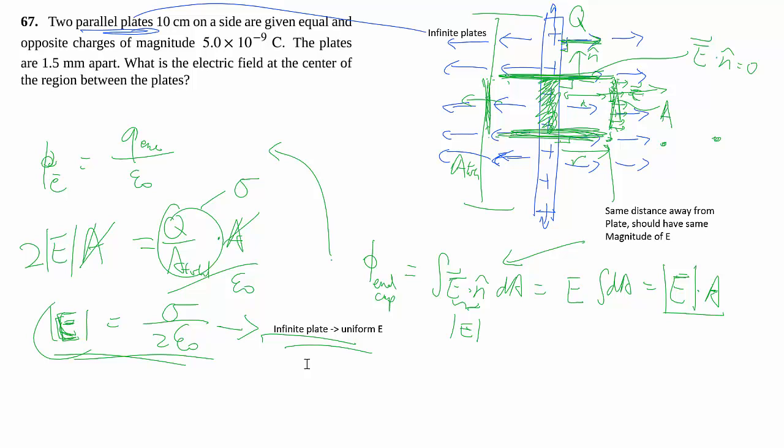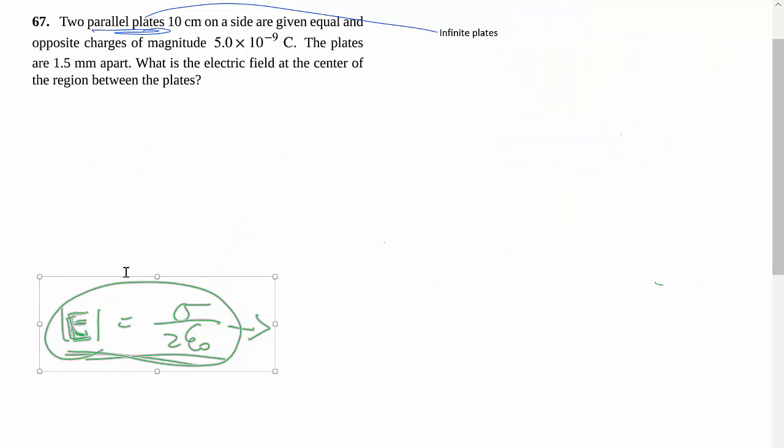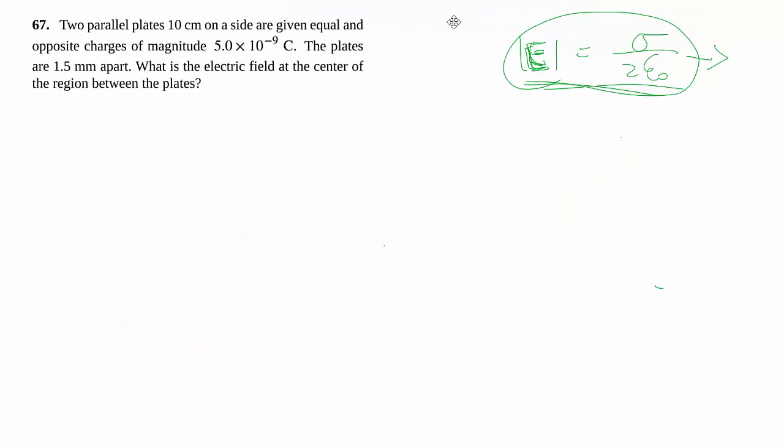So this is the crucial result that we want. Now that we have that, we can go ahead and solve this question fairly quickly. So here we have not just one plate, you actually have two plates. They have a certain area which is 0.1 meters times 0.1 meters, 10 cm on a side.